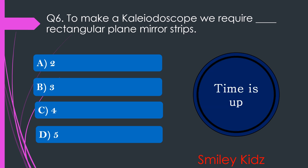Your time is up and the right answer is option B. 3. To make a kaleidoscope, we require 3 rectangular plane mirror strips.